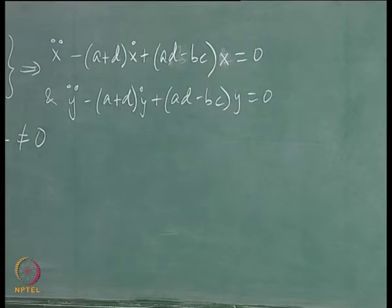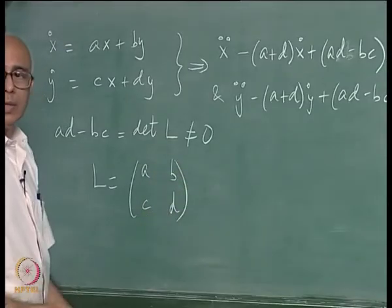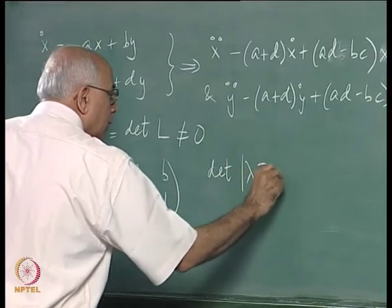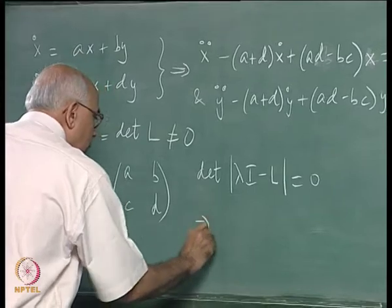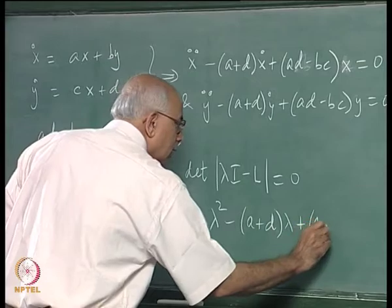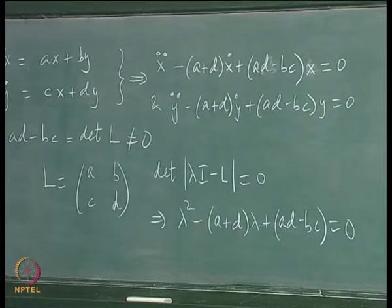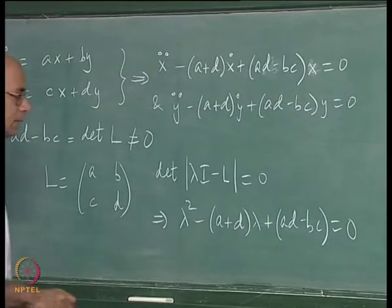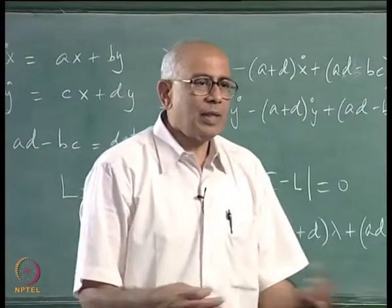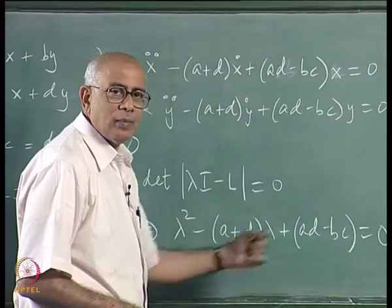For the matrix L = [[a,b],[c,d]], we find eigenvalues by writing det(λI - L) = 0, which implies λ² - (a+d)λ + (ad - bc) = 0. Notice these combinations are not arbitrary — (a+d) is the trace of the matrix and (ad - bc) is the determinant of the matrix.